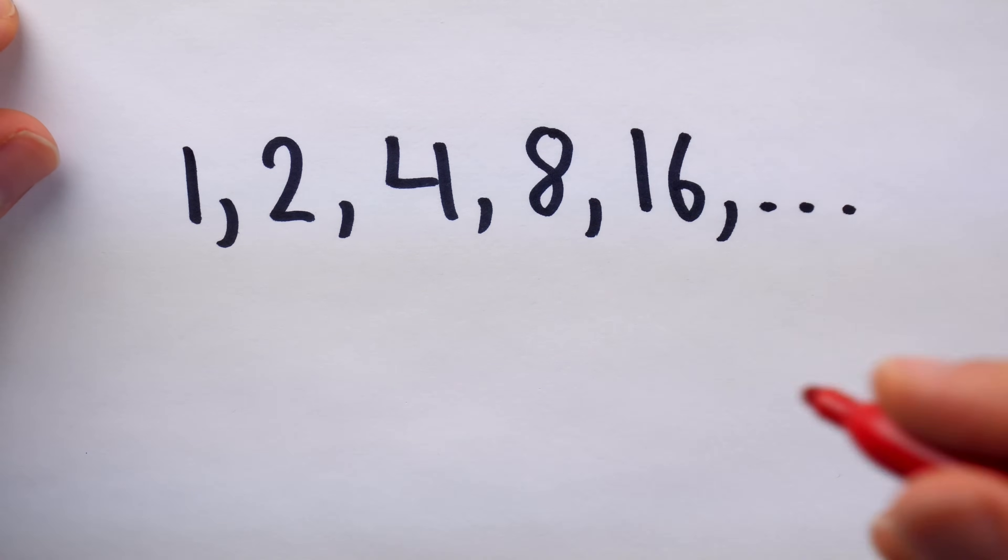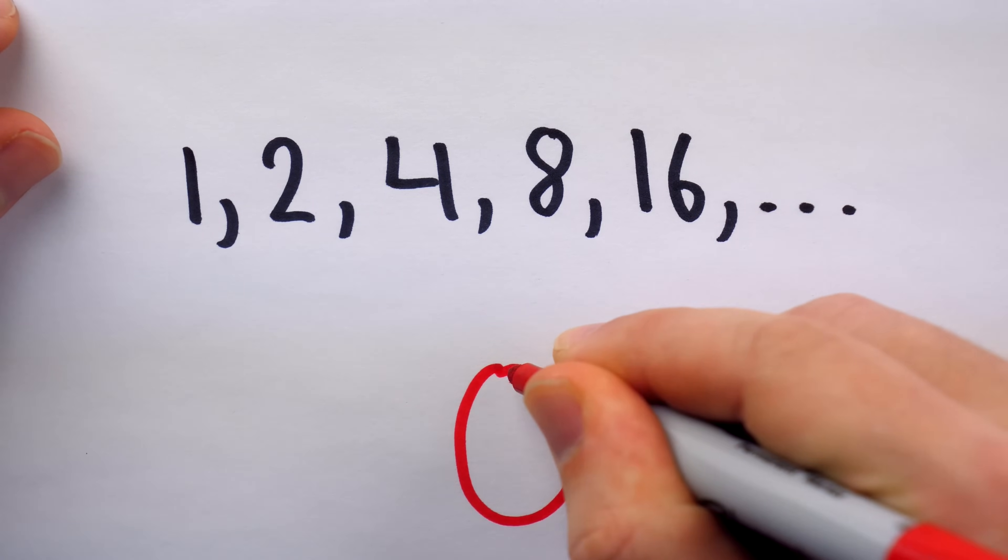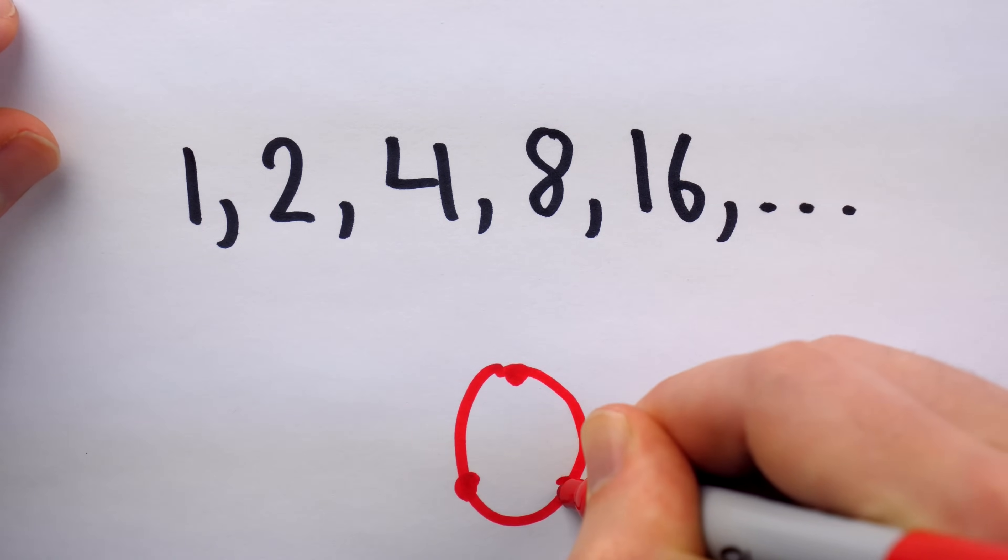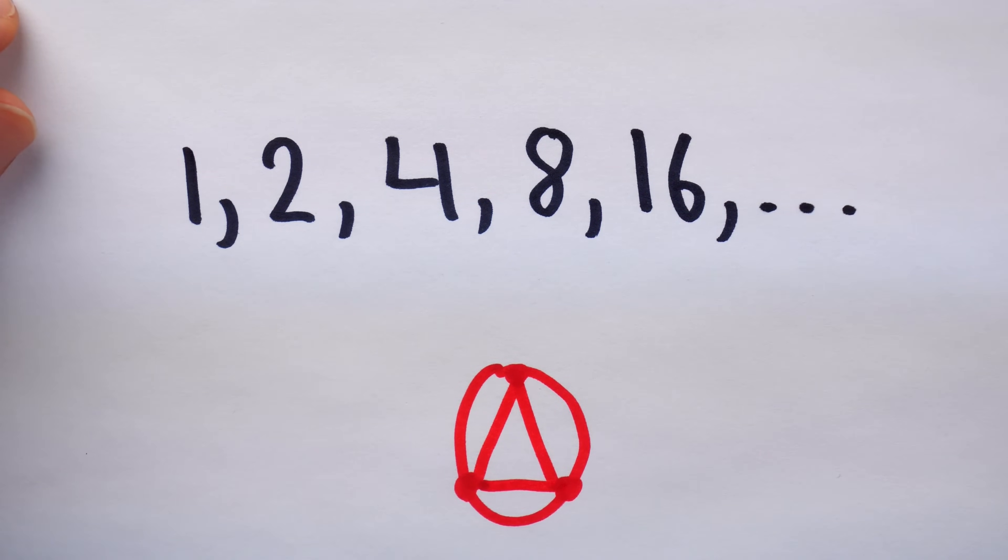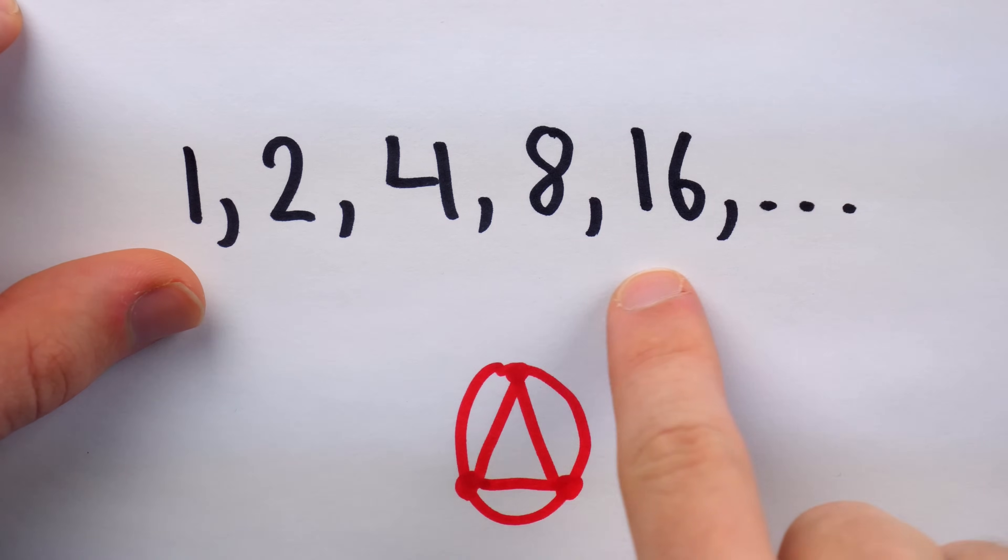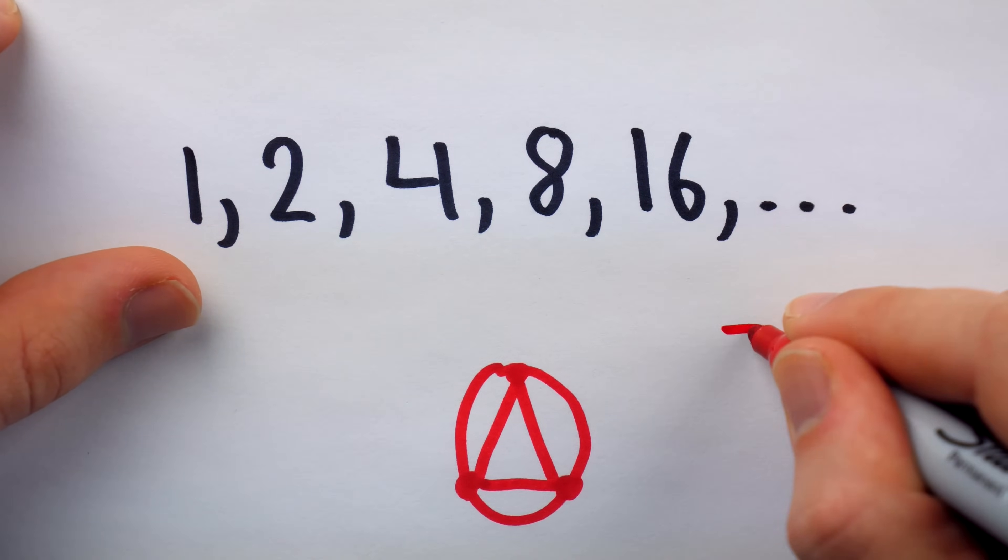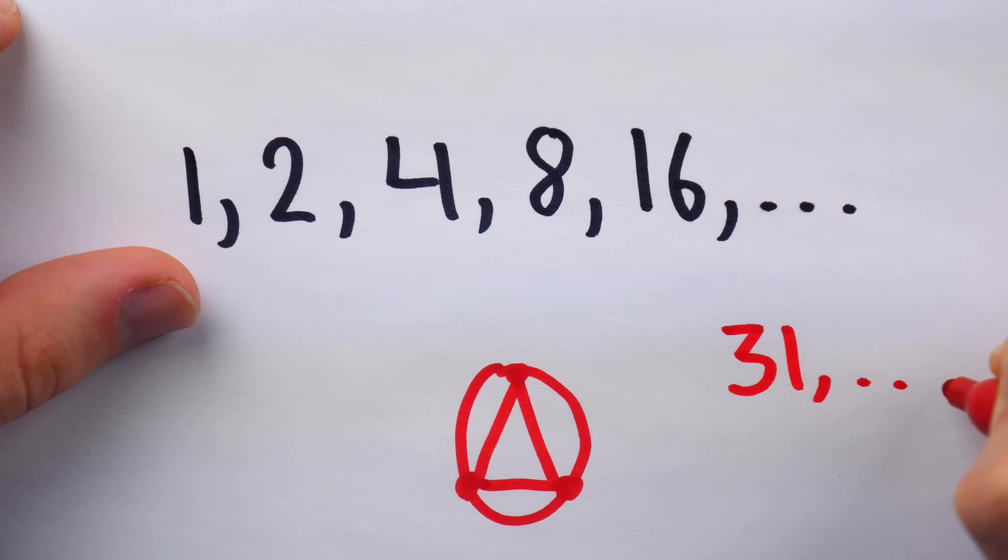There is, of course, a well-known problem concerning connecting points on a circle and counting the number of regions that connecting those points splits the circle into, and in this problem, you end up with this sequence followed by 31 and then some other numbers, so it doesn't exactly go as you would expect.